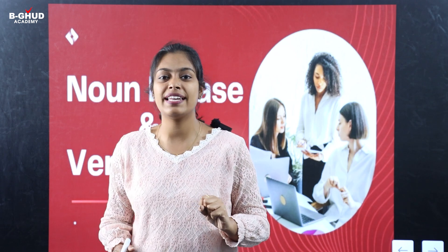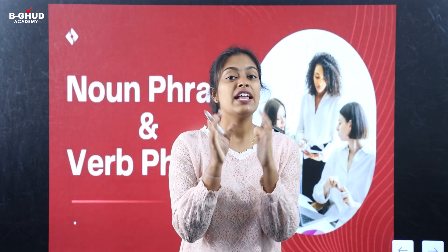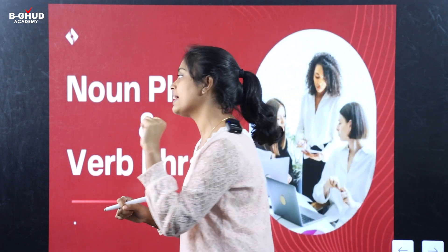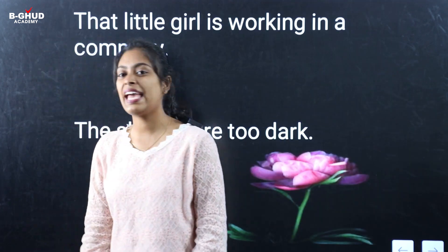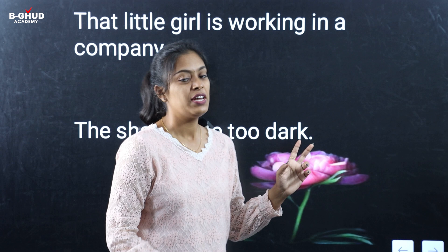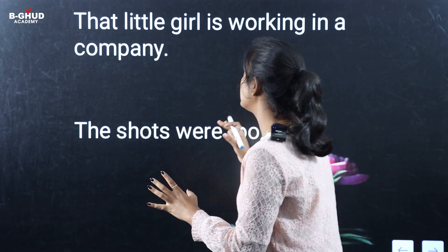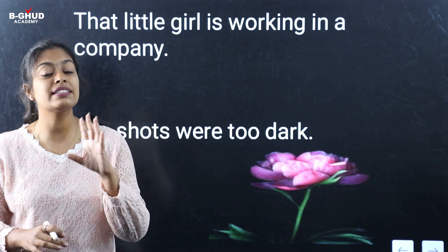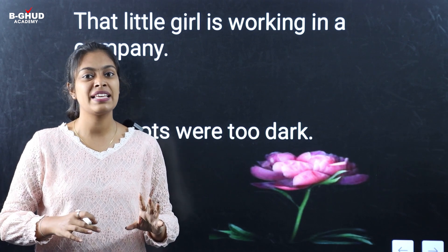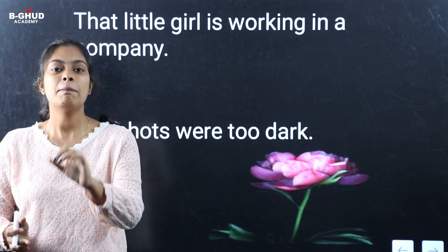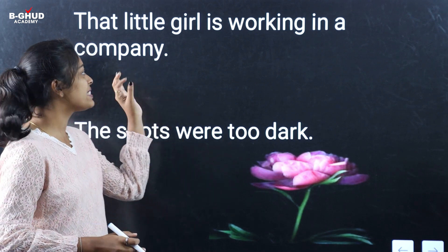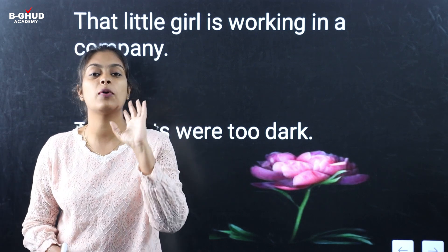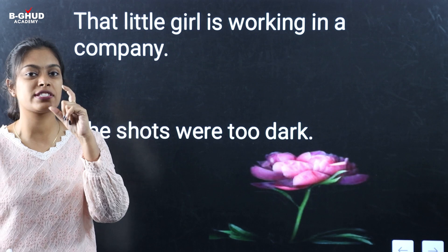So, can you identify them in a sentence? In a sentence, there is a noun phrase and a verb phrase. I will say the first sentence: 'That little girl is working in a company.' If we are using noun phrase and verb phrase, here is a trick. Looking at that sentence, you will find the verb. A verb can be an auxiliary verb.